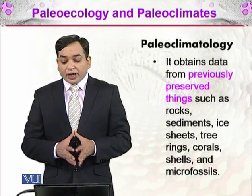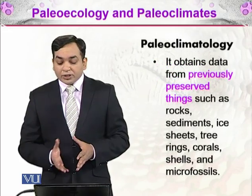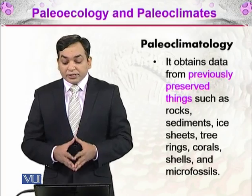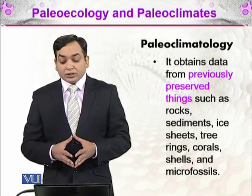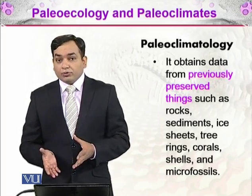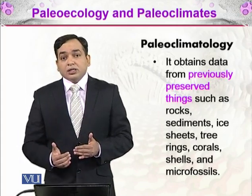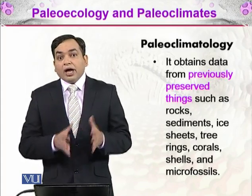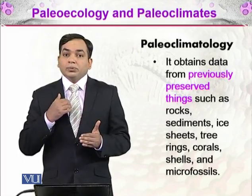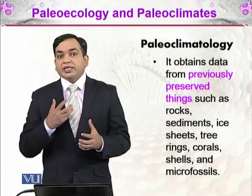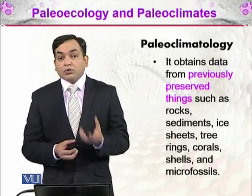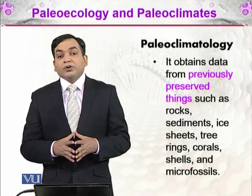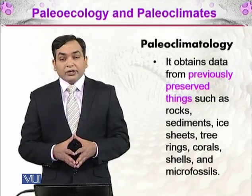Paleoclimatology obtains data from previously preserved things such as rocks, sediments, ice sheets, trees, tree rings, corals, shells, and microfossils. All of these things combine to provide a set of data that is read and assessed to determine what particular weather conditions were prevailing in a given area across geological time.